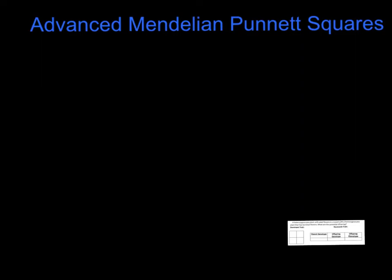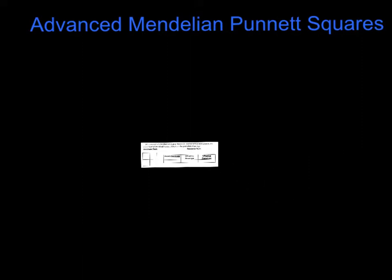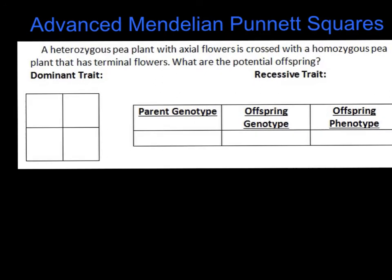Hello, this video is focused on what I'm calling advanced Mendelian Punnett squares. These are still things that follow the basic Mendelian structure, which means there's going to be a clear case of one trait being dominant and the other trait being recessive. The difference here is that I'm not giving you as much information directly in the problem. In these problems, there's less information presented to you and you have to infer more from the information that is presented. The thing I want you to remember is to still follow the same steps as last time, and we'll go through this problem together.